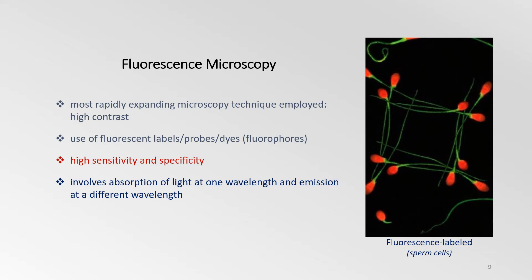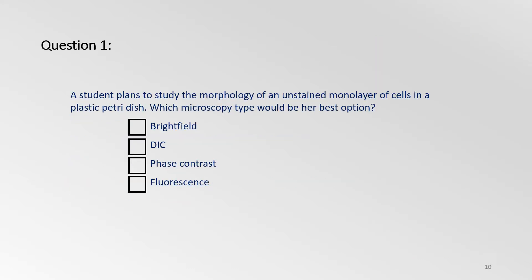Fluorescence involves an object absorbing light at one wavelength and then re-emitting it at another wavelength.